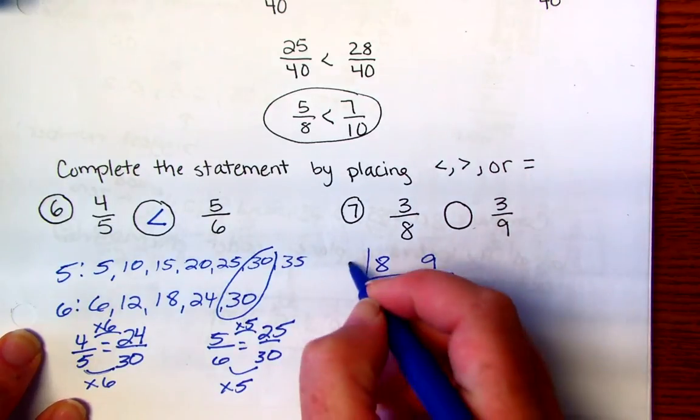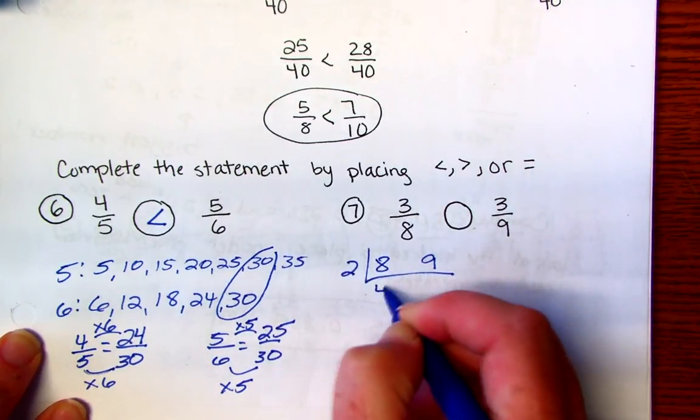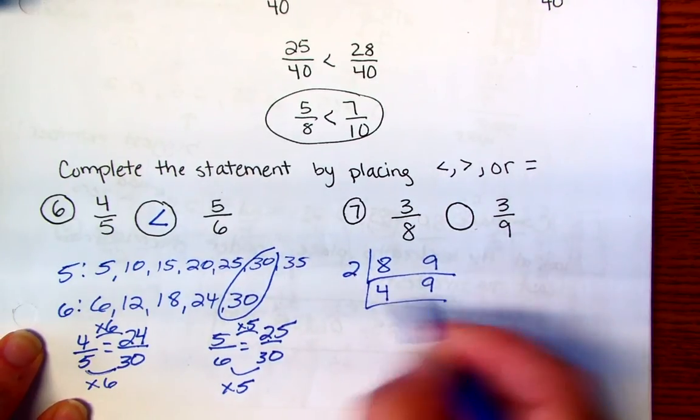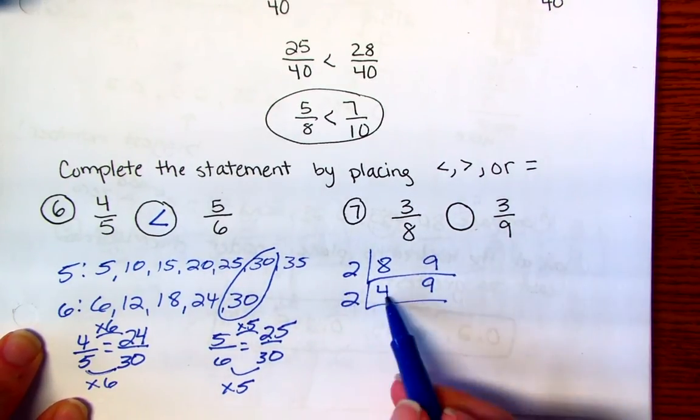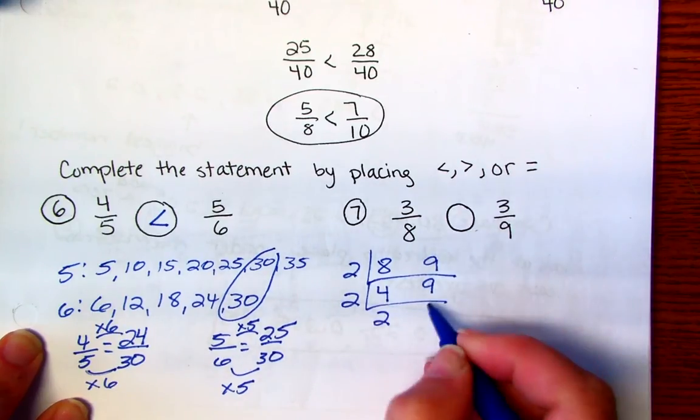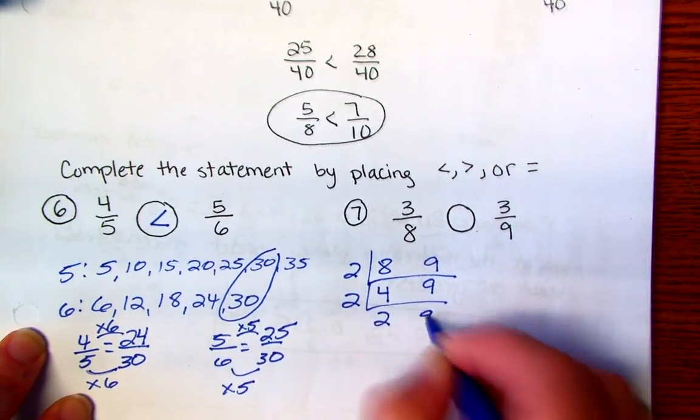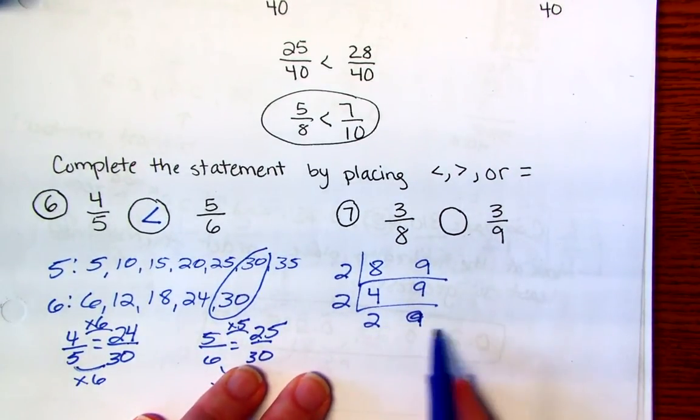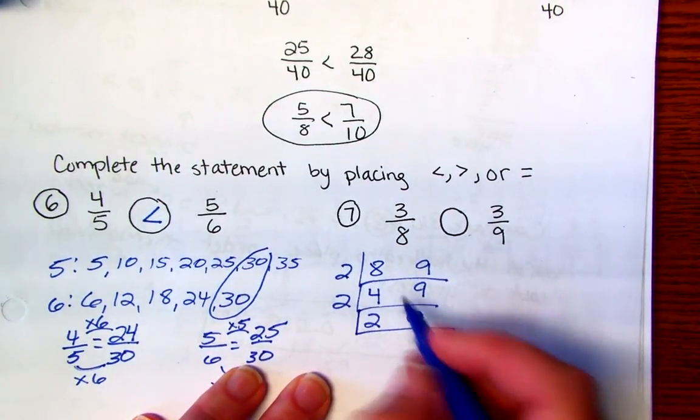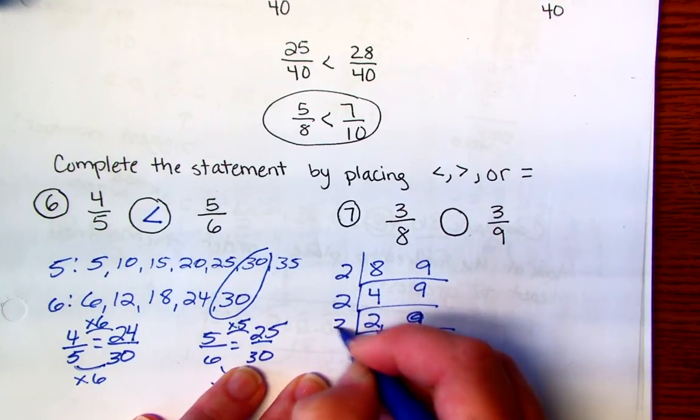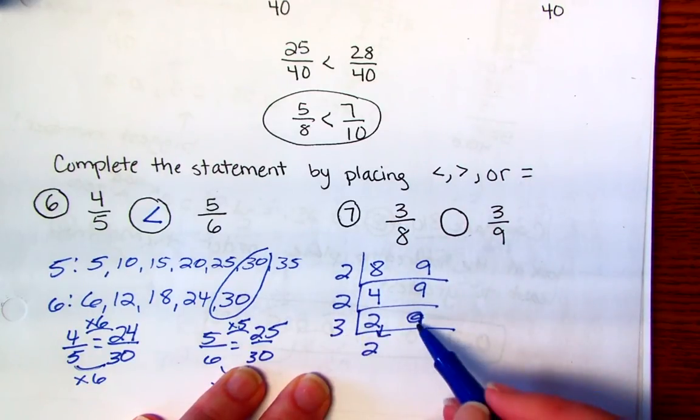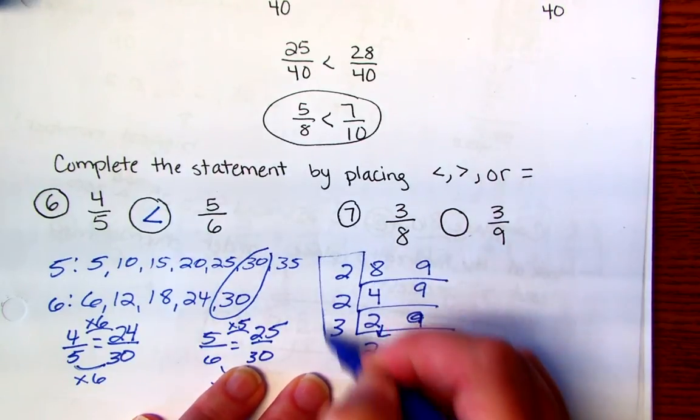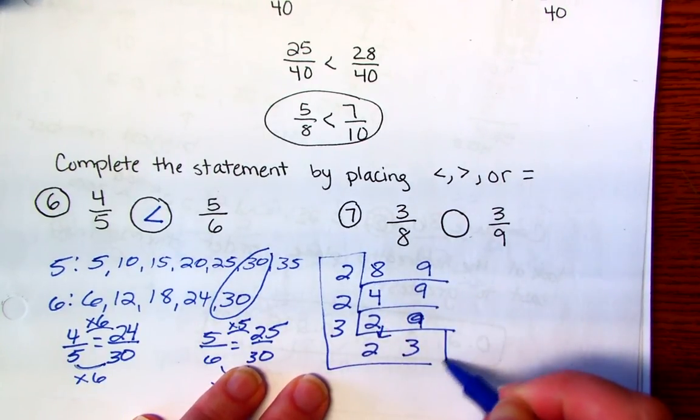So I'm going to go ahead and do 8 divided by 2, and that gives me 4. And then I'm just going to slide the 9. And then I'm going to divide by 2 again. So 4 divided by 2 is 2, and slide the 9 again. So there's no other factors that I can divide out by 2 other than 1, but I can divide out a 3. So I'm going to slide this again, divide out a 3, and then 9 divided by 3 is 3.